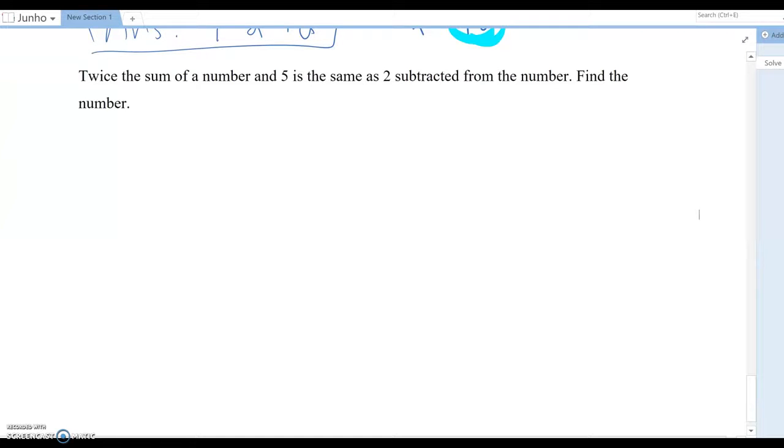So next one, twice the sum of a number and five is the same as two subtracted from the number. Okay, so this question has many different calculation combinations.